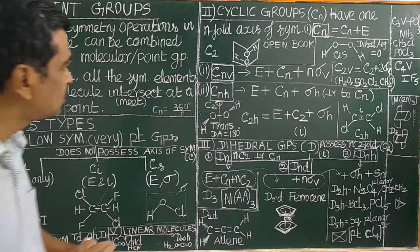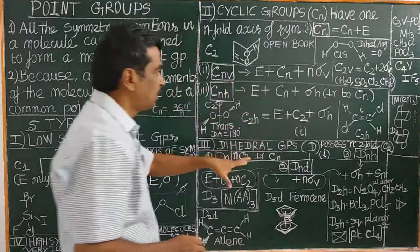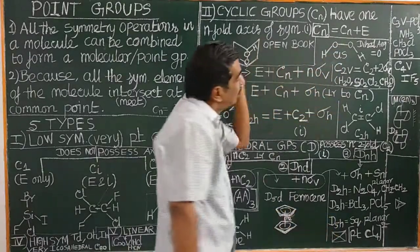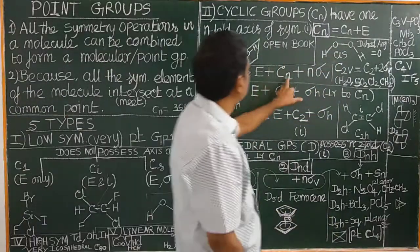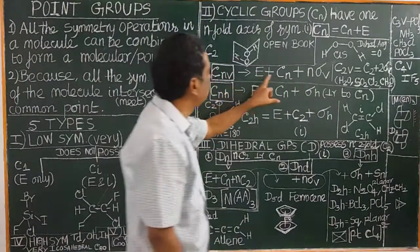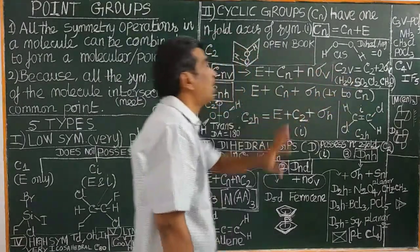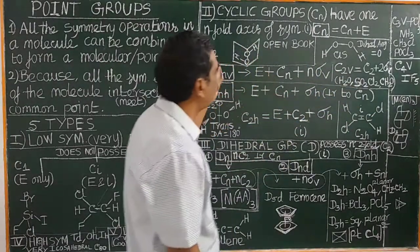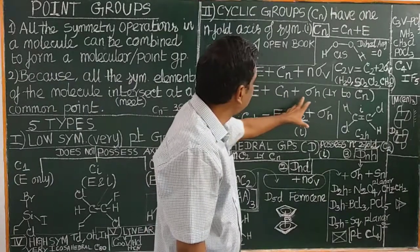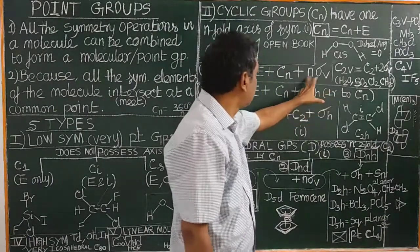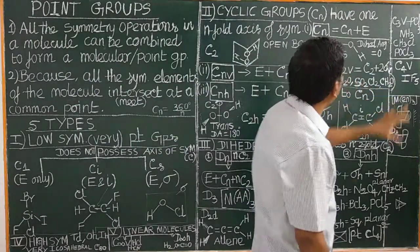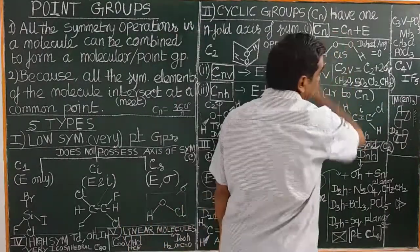There are three cyclic groups: Cn, CnV, and CnH. For example, C2V consists of E plus C2, two sigma V planes. C3V consists of E plus C3 plus three sigma V planes. Examples include C2V: water, SO2, Cl2 and similar molecules.